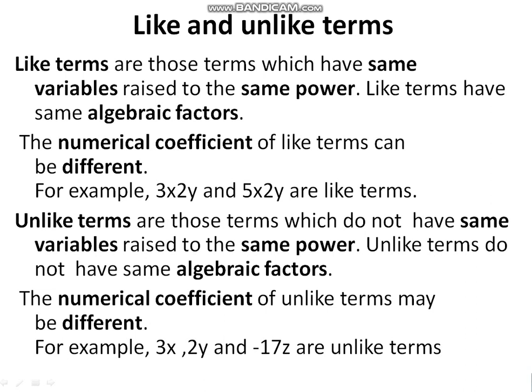Unlike terms are those terms which do not have the same variable raised to the same power. Unlike terms do not have the same algebraic factors. If the powers are different or the variables are different, then the terms are unlike terms. For example, 3x, 2y, and 17z are unlike terms because x, y, and z are different variables, and the powers can also be different.